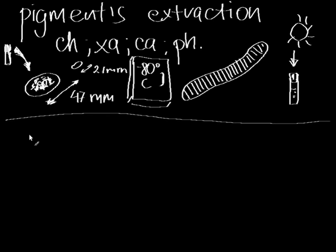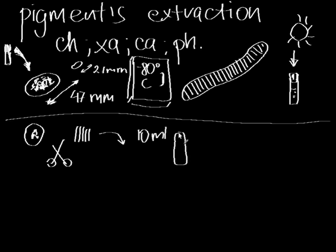We grab the filters with the biomass and cut them with scissors into small pieces. Then we put them into a 10-milliliter conical test tube.